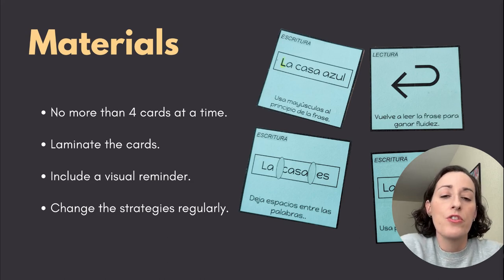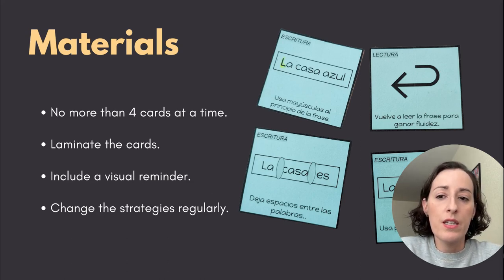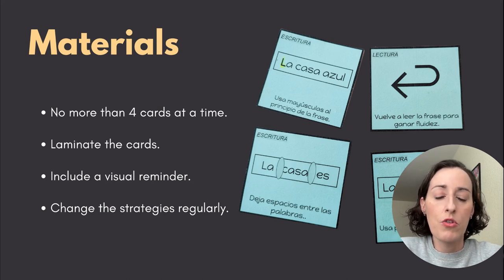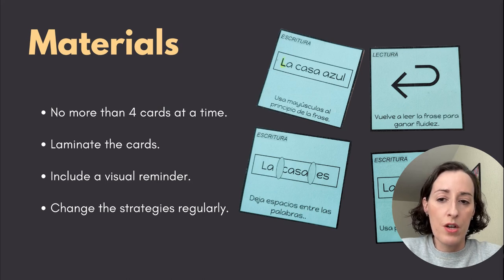The materials that you are going to need to use this strategy would be no more than four cards at a time. I recommend to use construction paper, something that is a little harder than normal paper. Since this is something that you are going to use regularly, you can laminate the cards.